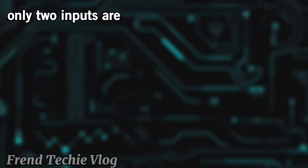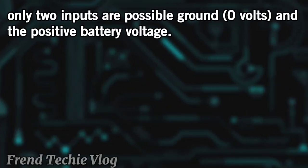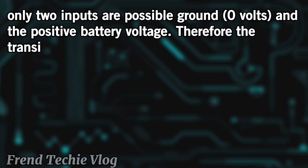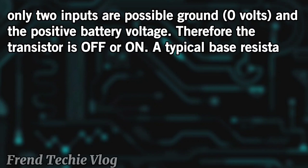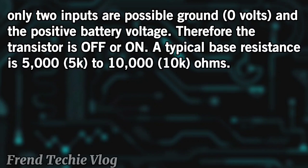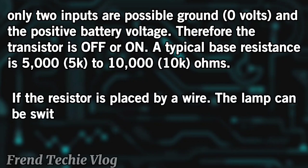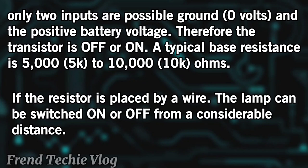Only two inputs are possible: ground at 0 volts, or the positive battery voltage. Therefore the transistor is either off or on. A typical base resistance is 5,000 to 10,000 ohms. If the resistor is replaced by a wire, the lamp can be switched on or off from a considerable distance.